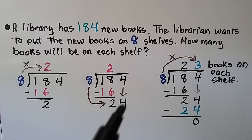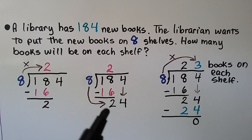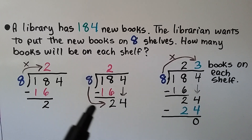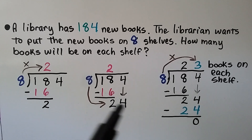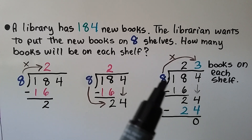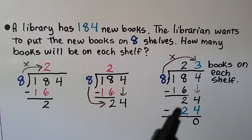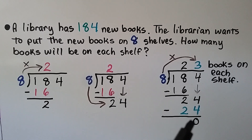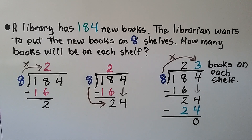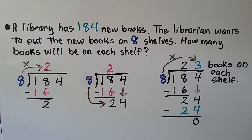Now it's the four's turn to come down. We bring the four down and ask ourselves: how many times can this eight fit into twenty-four? We think eight times three is twenty-four. We write eight times three is twenty-four down here, do our subtraction and get zero. We know that the librarian can put twenty-three books on each shelf.